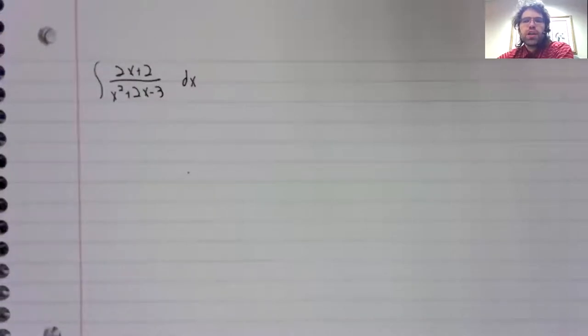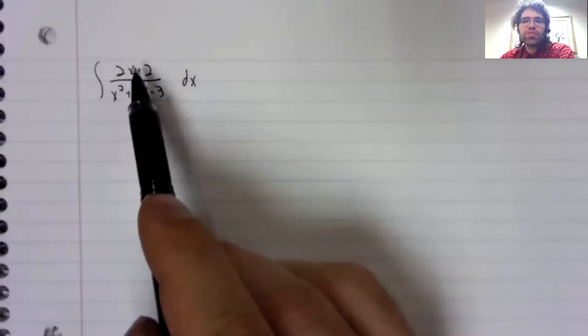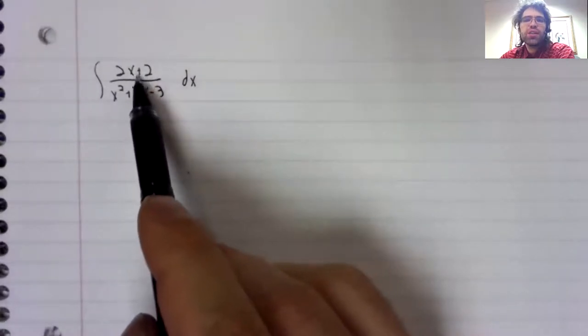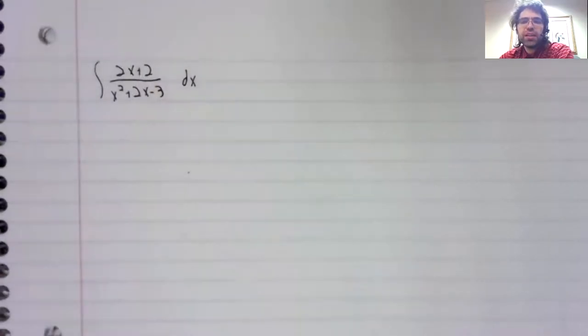We've already computed this integral, but when we computed it, we weren't able to see where the partial fraction decomposition came from. I just said that this rational expression could be rewritten. Let's now actually do the work behind that.